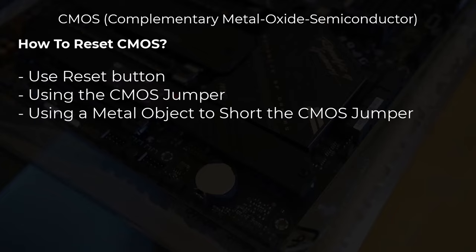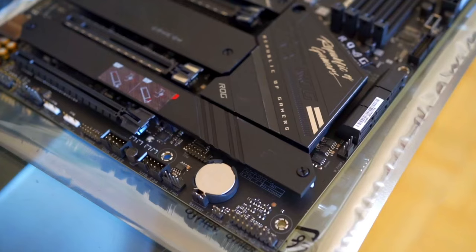And there you have it. The CMOS battery may be small, but it is vital for keeping your computer running smoothly. Understanding what it does and how to fix it can save you from bigger issues later. Keep an eye out for signs of a failing battery and replace it when needed to ensure your computer keeps working efficiently.